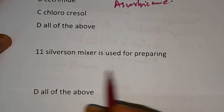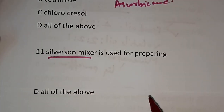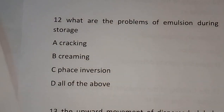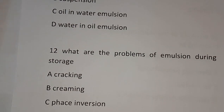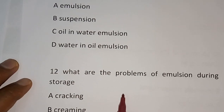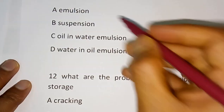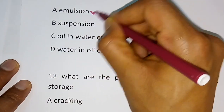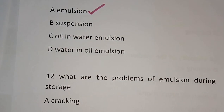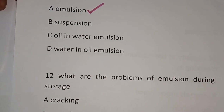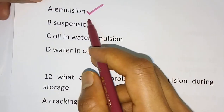Question number 11: Silverson mixer is used for the preparation of? Options are emulsion, suspension, oil in water type emulsion, water in oil type emulsion. The correct answer is emulsion — Silverson mixer is used for the preparation of emulsion.